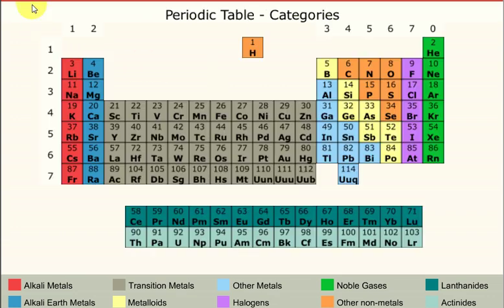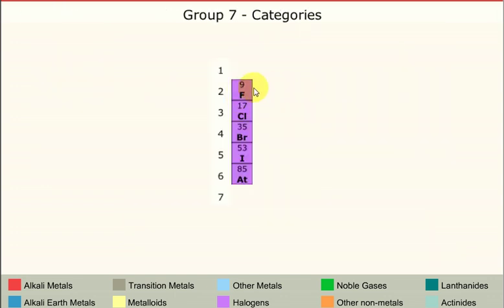Let's have a look at another group. If we this time select group seven over here. Here we are: fluorine, chlorine, bromine, iodine, astatine. Now all of these atoms, all of these elements, have one space in their outer electron shell. They're all looking to gain one electron in their reaction. And the pattern is the opposite of the alkali metals. The most reactive is at the top, and the least reactive is at the bottom. So fluorine is the most reactive of the halogens, and astatine is the least reactive of the halogens.